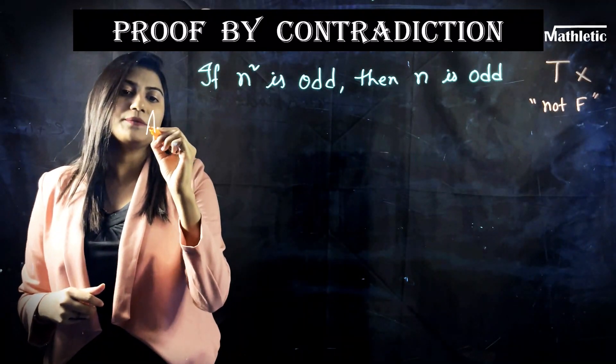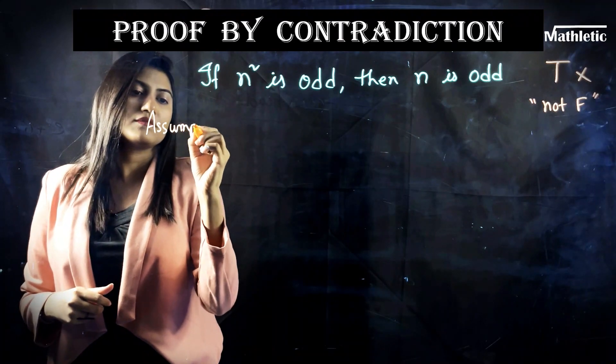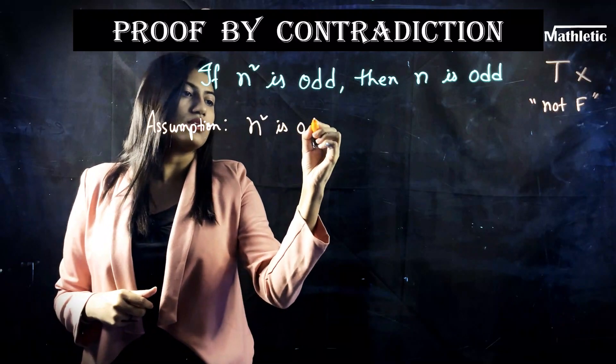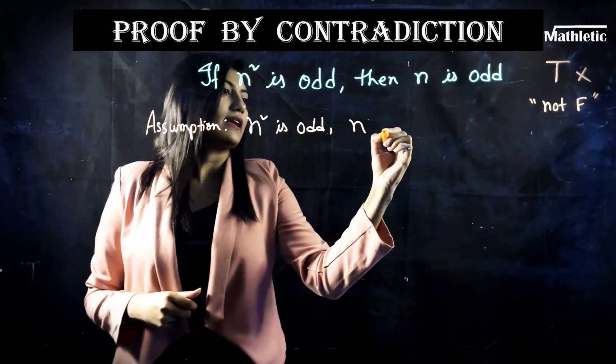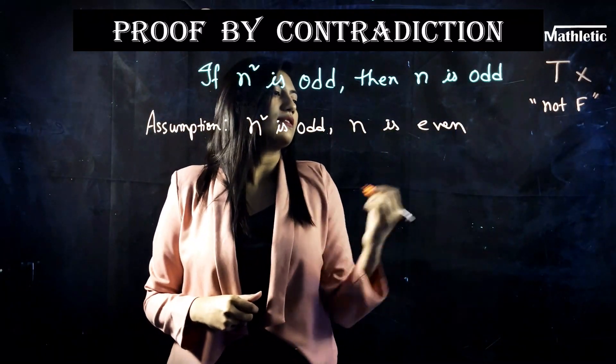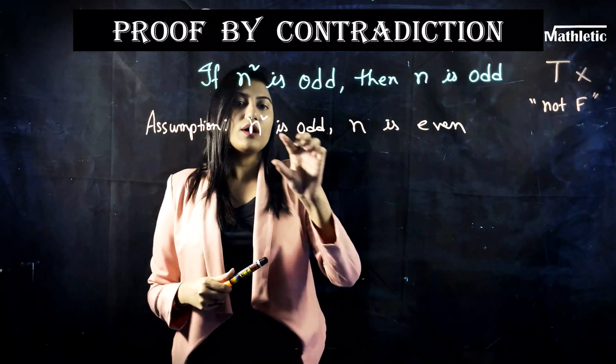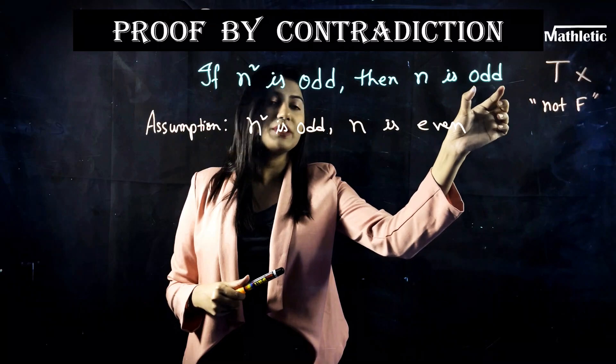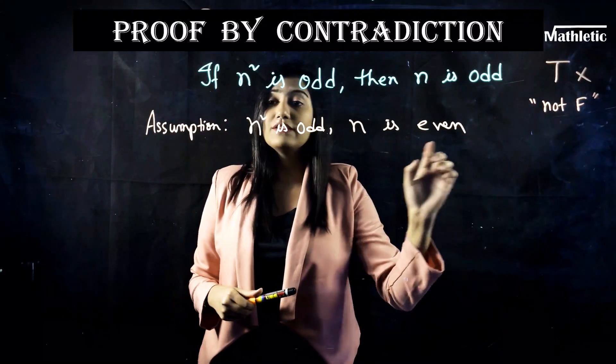So my assumption should be n² is odd, n is even. So my assumption is n² is odd but instead of n being odd, I am selecting n as an even integer.